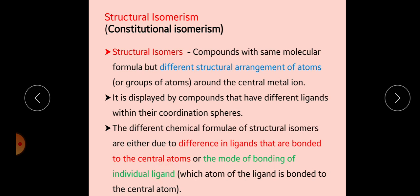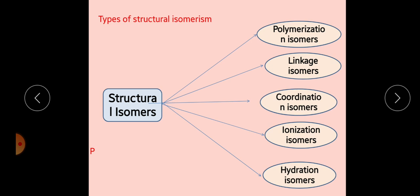There are two basic reasons for the formation of different structural isomers. First is differences in ligands that are bonded to the central atom — the ligands bonded to the central metal atom can themselves be different in the two isomers. Second is the mode of bonding of individual ligands — even one individual ligand changing its mode of bonding can give rise to structural isomers. We will discuss each of the five types of structural isomers in detail.